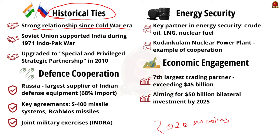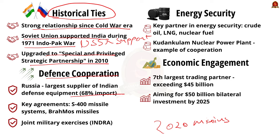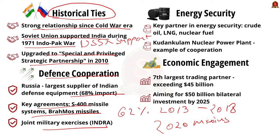In wake of the 1971 Indo-Pak war, Russia supported India while the US and China supported Pakistan. In 2000, the relation was elevated to a strategic partnership, and in 2010, it was further upgraded to a special and privileged strategic partnership. In defense, Russia is the largest supplier of defense equipment to India, accounting for almost 68% of India's defense imports between 2012 and 2016, and 62% between 2013 and 2018. Key agreements include the procurement of S-400 missile systems, BrahMos missile collaboration, and joint military exercises like Indra.